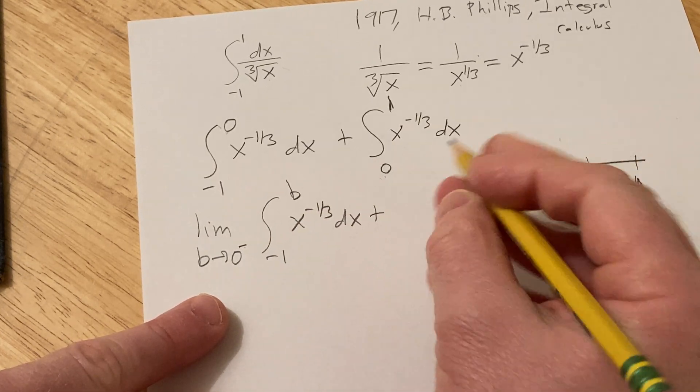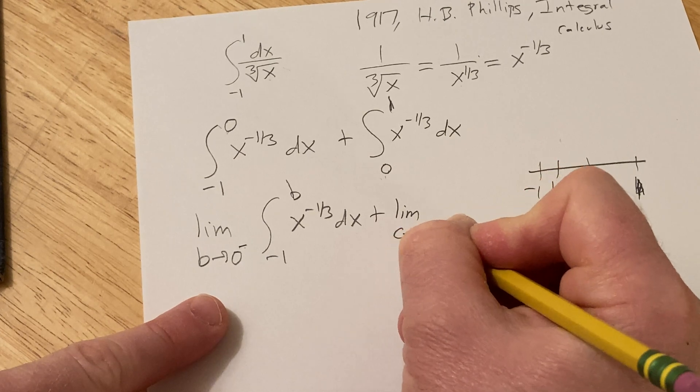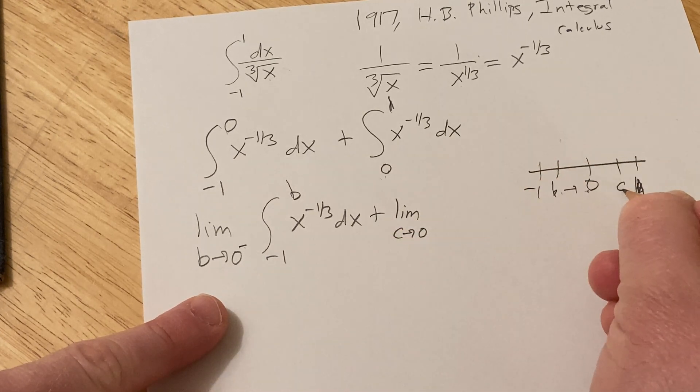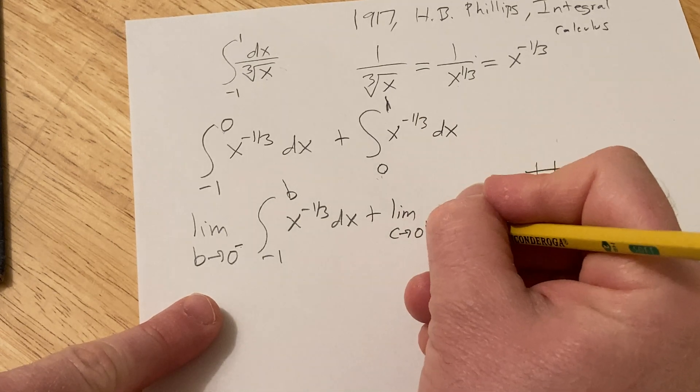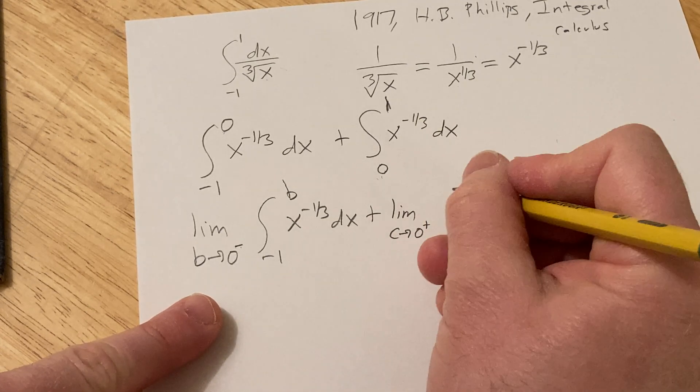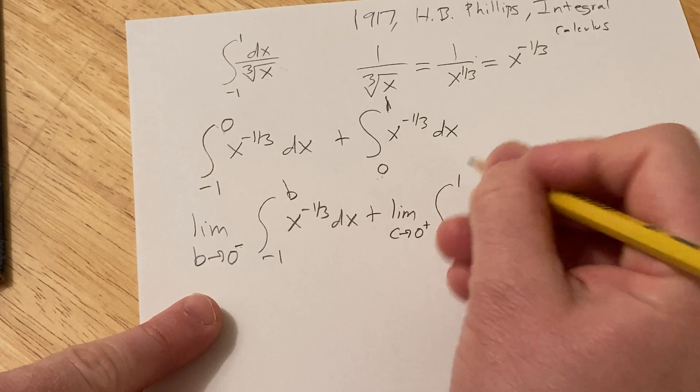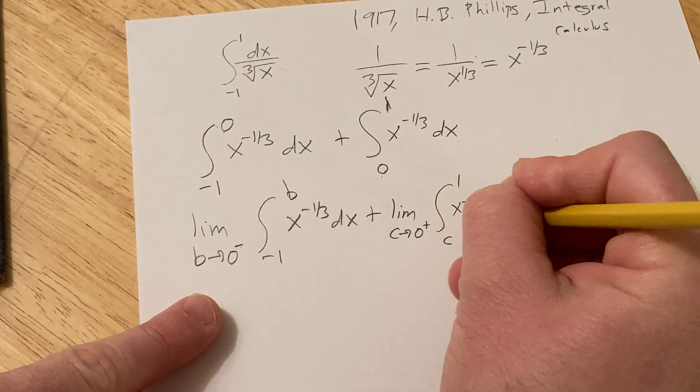Here I'm going to replace this with a c, so this is the limit as c approaches zero. If c is over here, this time it's approaching from the right. The plus sign indicates it's approaching from the right. We have c to 1, x to the negative one-third dx.